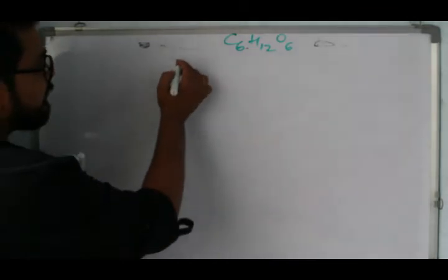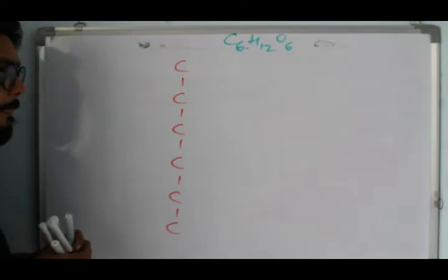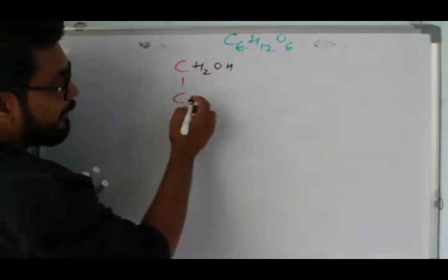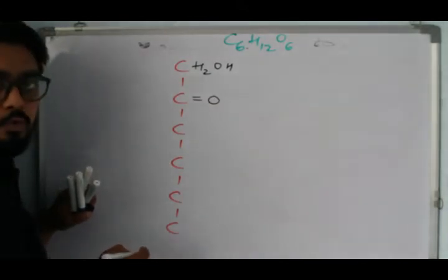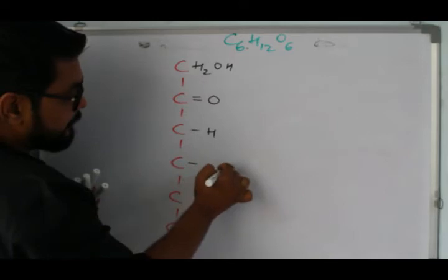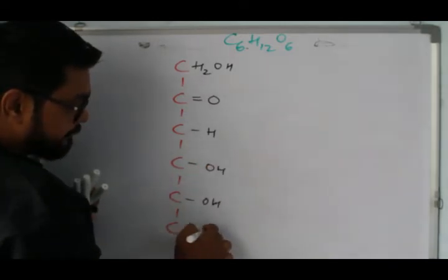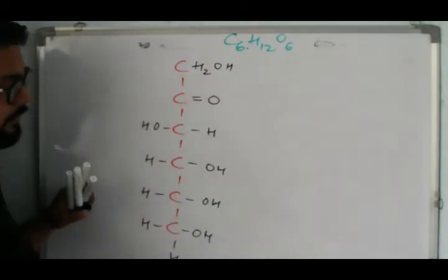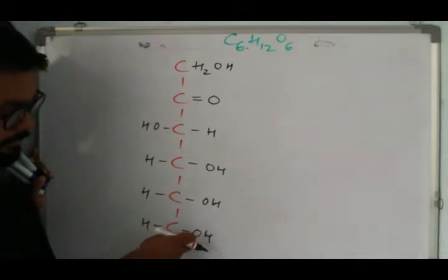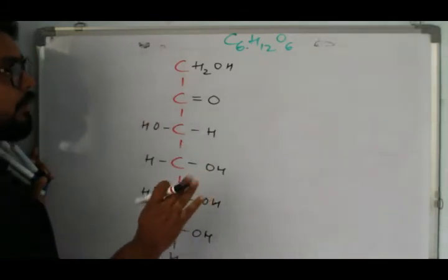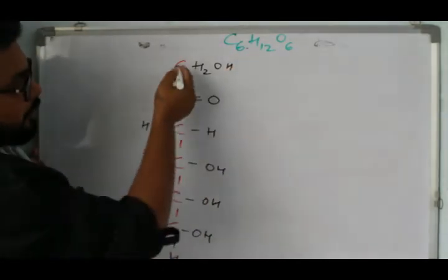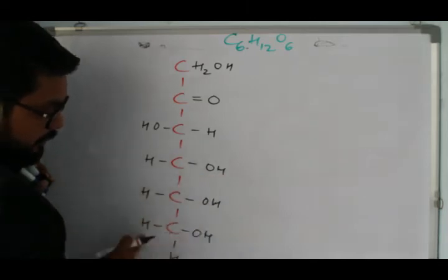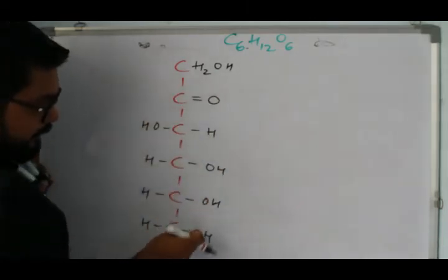Fructose has six carbons — one, two, three, four, five, six. Carbon one is CH2OH. The second carbon has a double bond to oxygen, which is a ketone group. The remaining carbons have H and OH groups. Carbon six is also CH2OH. Let's verify the carbon count: one, two, three, four, five, six — it satisfies the numbers.